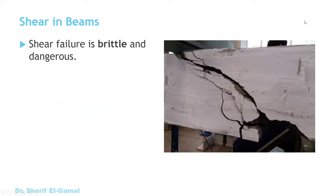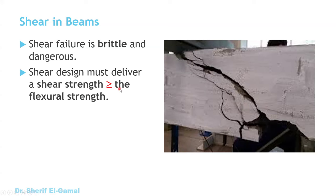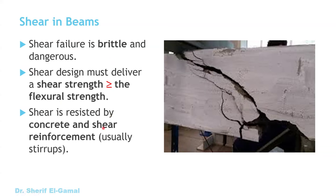Shear failure is a very brittle failure compared to flexural failure. So when we design, we have to prevent any shear failure in beams. You want the beam to fail in flexure before it fails in shear. So you need the flexural capacity of the beam to be greater than the shear capacity. Shear is resisted by two things: concrete and shear reinforcement, which are usually stirrups or links.